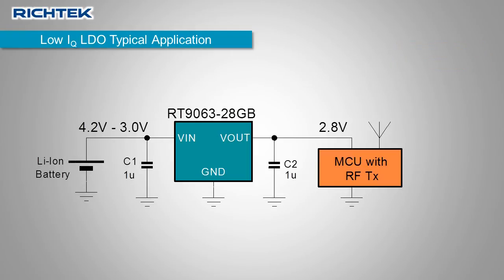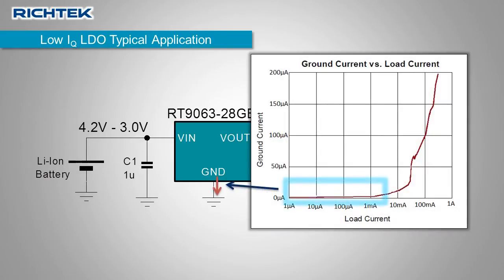The low IQ LDO RT9063 provides a stable 2.8 volt supply to the microcontroller, and the LDO ground current stays relatively constant at 1 microamp in the low load range, thereby prolonging the battery life.